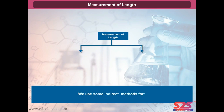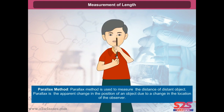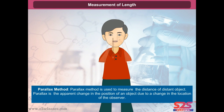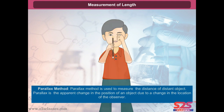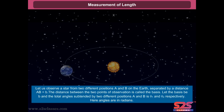Measurement of length: we use some indirect methods for measuring large distances and measuring very small distances. The parallax method is used to measure the distance of a distant object. Parallax is the apparent change in the position of an object due to a change in the location of the observer. Let us observe a star from two different positions A and B on the earth, separated by a distance AB equal to b.